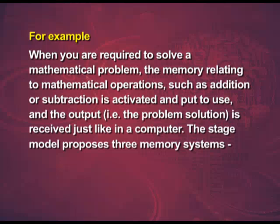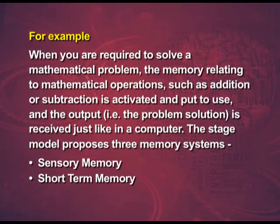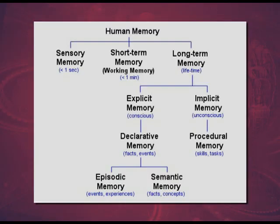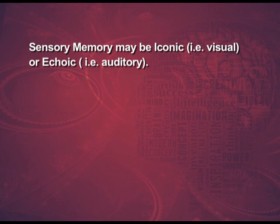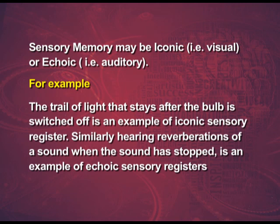The stage model proposes three memory systems: sensory memory, short-term memory and long-term memory. Incoming information first enters the sensory memory, which has a large capacity but is of very short duration — less than one second. It registers information from each of the senses as an exact replica of the stimulus. Sensory memory may be iconic (visual) or echoic (auditory). For example, the trail of light that stays after a bulb is switched off is iconic, while hearing reverberations of a sound after it has stopped is echoic.